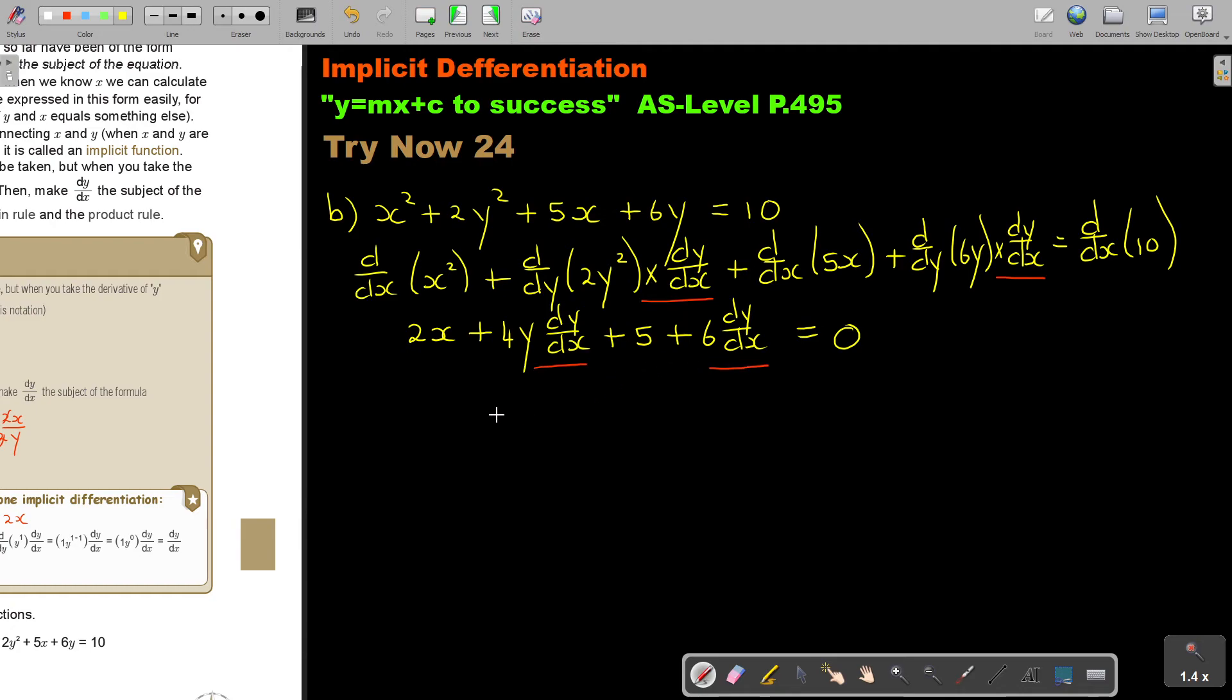Now keep these terms on this side. So 4y dy over dx plus 6 dy over dx. And that's negative 2x equals, and now bring the terms over, the negative 2x and the negative 5. Now take this out as a common factor. So dy over dx equals 4y plus 6.